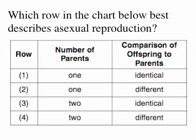Which row in the chart below best describes asexual reproduction? The first column gives you number of parents, and the second says comparison of offspring to parents. In asexual reproduction, you have one parent and identical offspring. So, the answer is one.